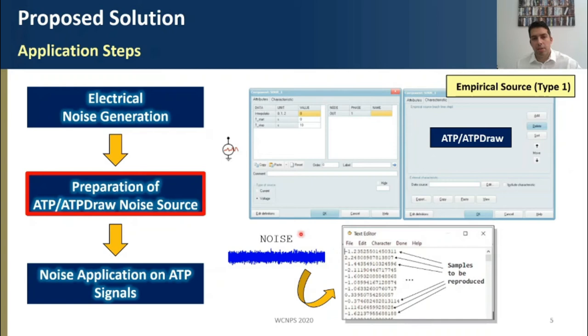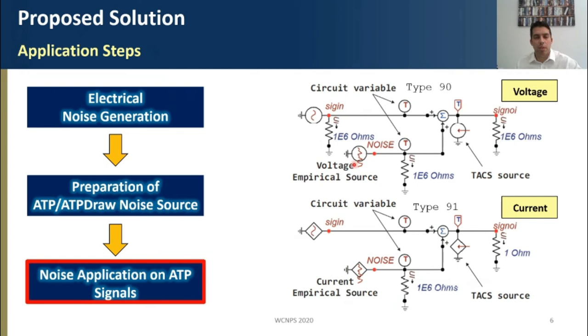Finally, we just take this empirical source and we connect this source into an emulation noise circuit, in which we take the signals from the system and the noise signal, we transform these signals into TACS variables, in order to allow their superposition, and then we take the obtained noisy TACS signal into a system signal by means of TACS source. We can do this procedure for voltages and currents in the same way, just paying attention to the types of this source you are using.